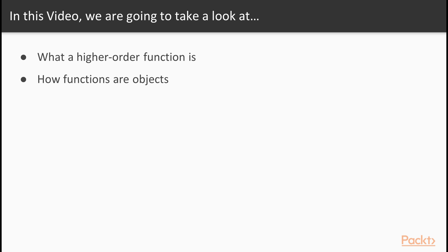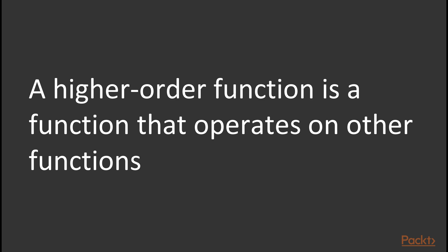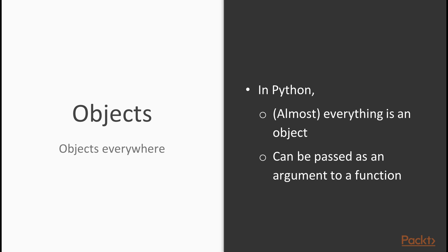What are we going to cover in this video? We'll start by considering what a higher order function is, and we're also going to consider the fact that in Python, functions are simply objects, just like almost anything in Python is an object. A higher order function is quite simply any function that operates on other functions. So whereas a normal function might operate on integers or strings, a higher order function operates on other functions. To understand higher order functions, it's very important to realize that in Python, almost everything is an object — a string is an object, an integer is an object, and also a function is an object. And because a function is an object, it can be passed as an argument to another function, just like an int or a string can be passed as an argument to a function.